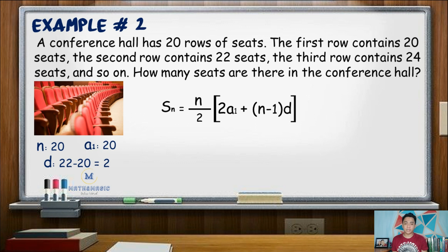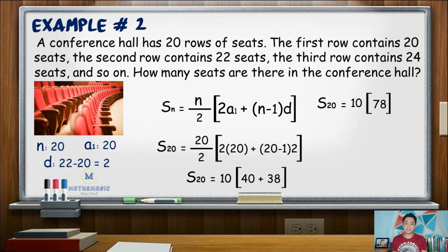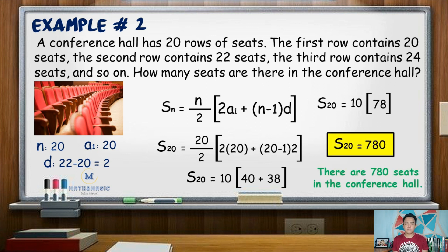Putting all of these values in our formula, S sub 20 is equal to 20 over 2 times the quantity 2 times positive 20 plus quantity 20 minus 1 times positive 2. 20 divided by 2 is positive 10. 2 times positive 20 is positive 40. 20 minus 1 is 19, times positive 2, that is 38. Adding 40 plus 38 gives 78. Multiplying by positive 10 gives us 780. Hence, there are 780 seats in the conference hall.